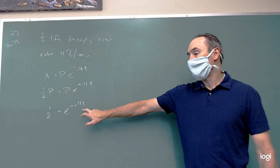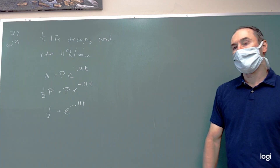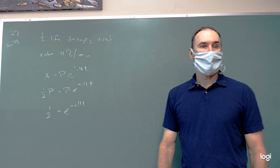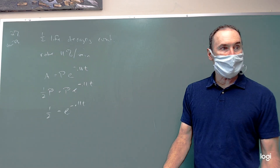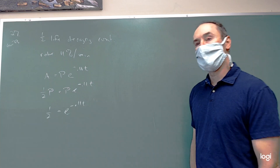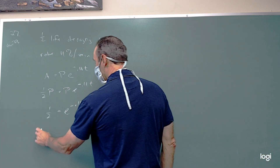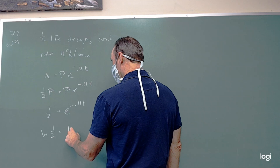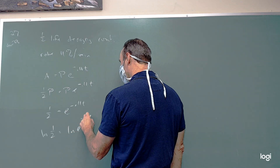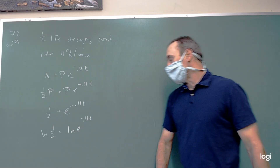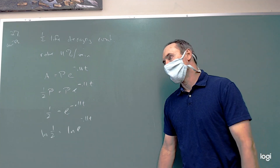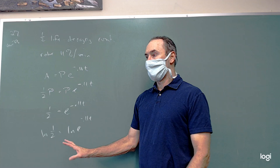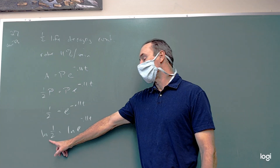Because we're trying to solve for a variable that's in the exponent, we want to take the log of both sides. Because it's an exponential base e (Euler's number), it's going to be simpler for us to take the natural log of both sides. This gives us a chance to play around with our knowledge of logarithms.